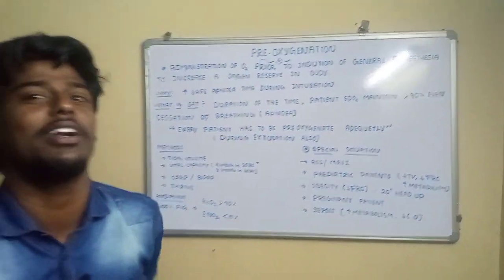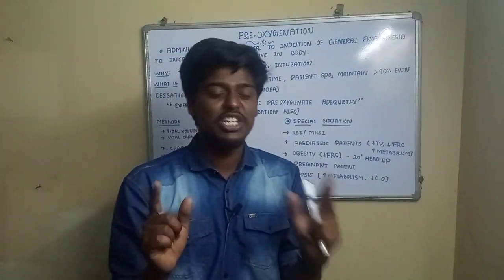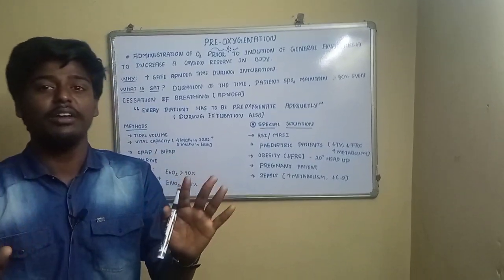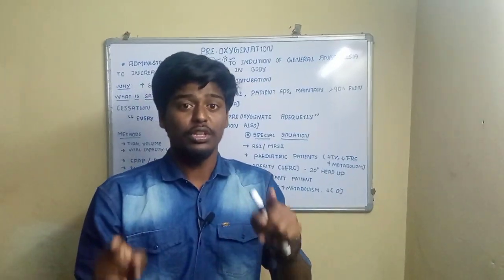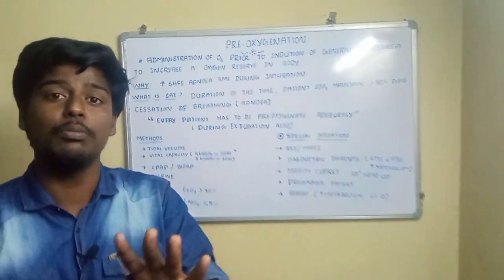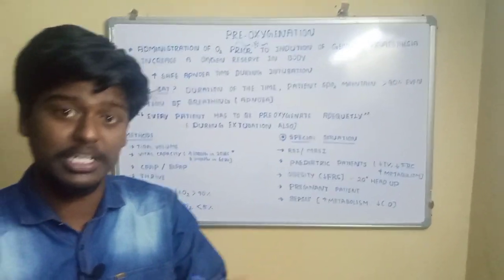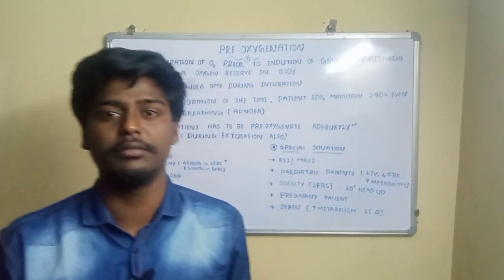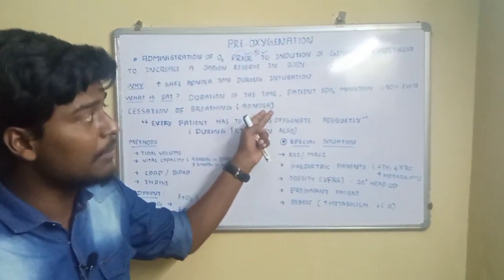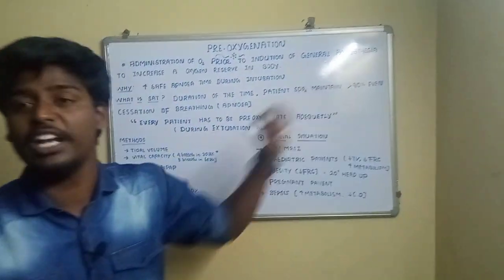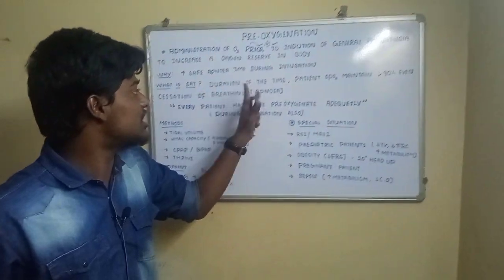What is safe apnea time? Safe apnea time is the duration of time during which a patient who is not breathing — that is, apneic — still maintains an SpO2 of more than 90%. The duration of time the patient's SpO2 stays above 90% even with cessation of breathing is called the safe apnea time.